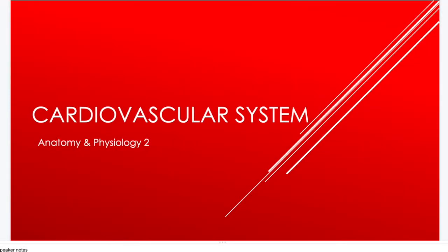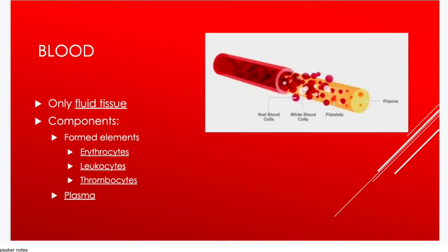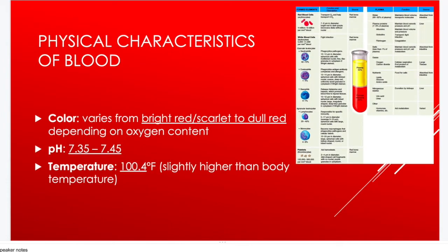We are going to begin looking at the cardiovascular system by taking a look at blood. Blood is our only fluid tissue; if you remember back to histology, it is a form of connective tissue and there are several components that make it up. We have formed elements — the different types of cells in our blood — and then we have plasma.